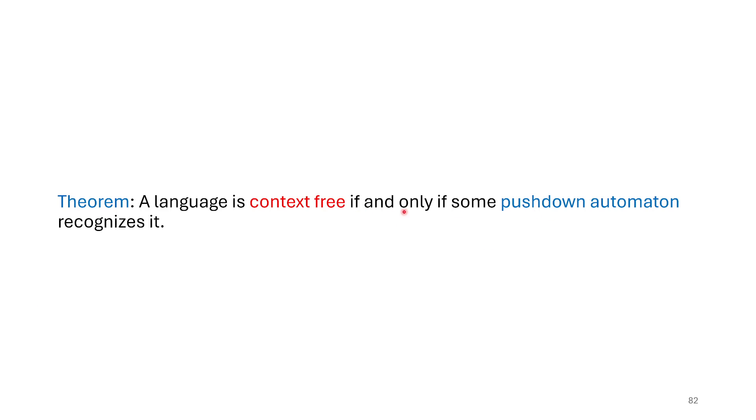This part tells us that not only should, if a language is context-free, then there's a pushdown automaton for it, but the only if tells us it goes the other way as well—if there's a pushdown automaton, then it must be context-free. Now remember, our definition of context-free is that there's a context-free grammar. So really what we're saying is there's an equivalence in power between these two types of computational models.